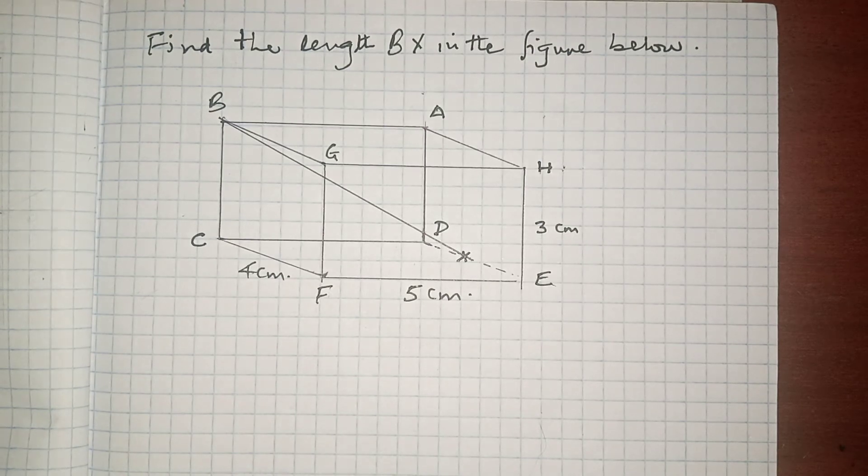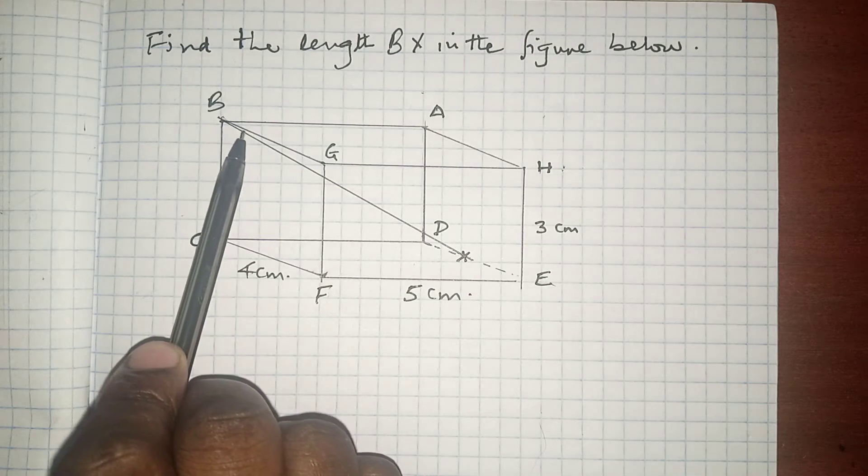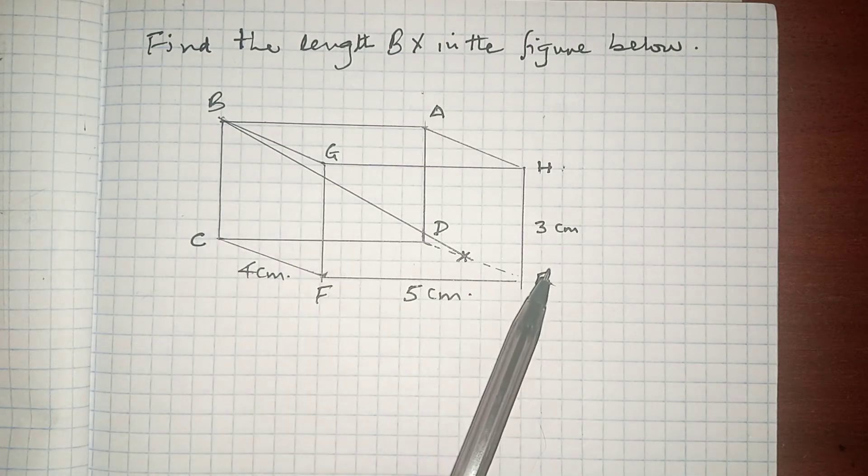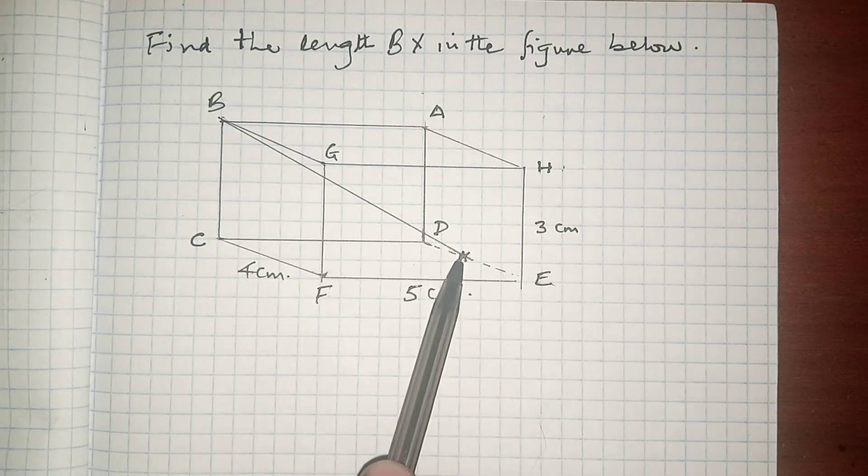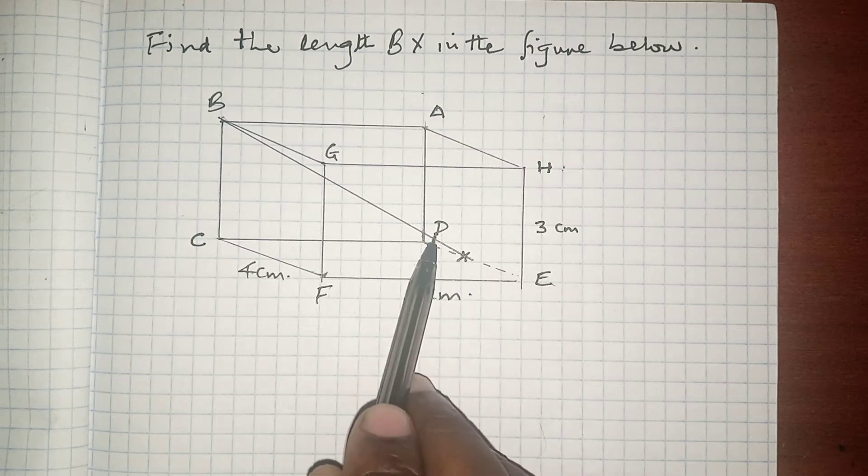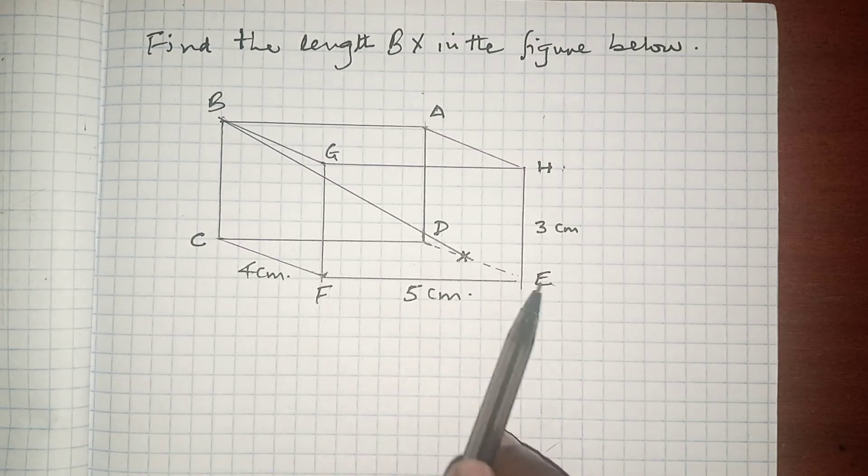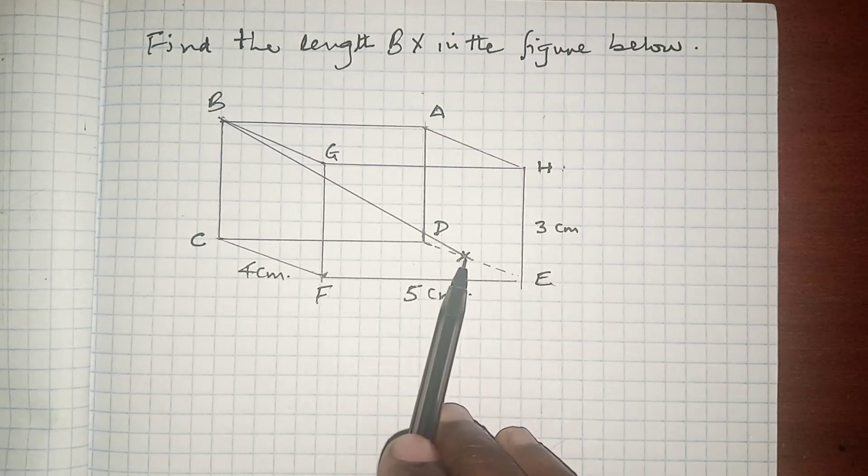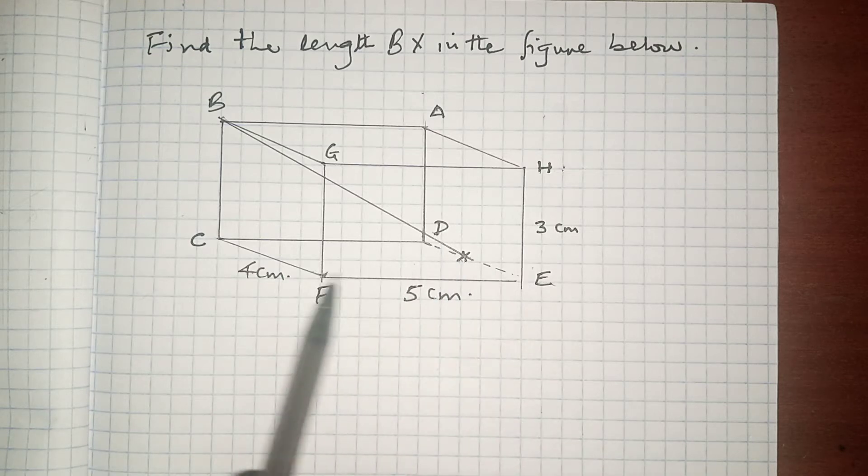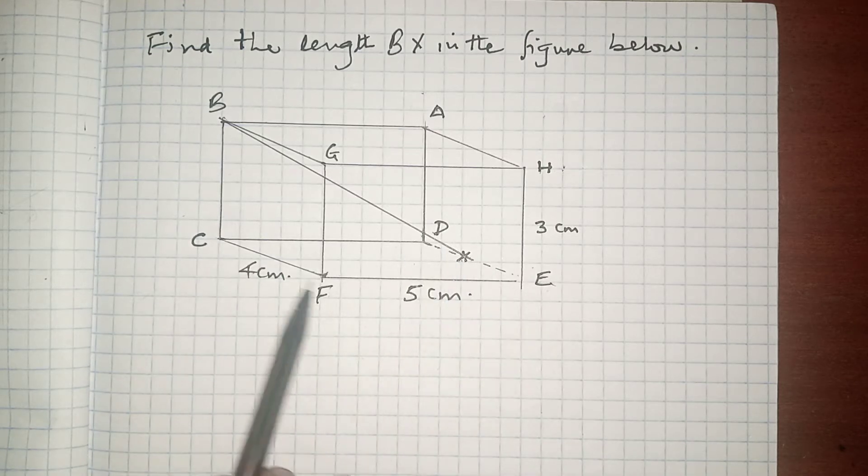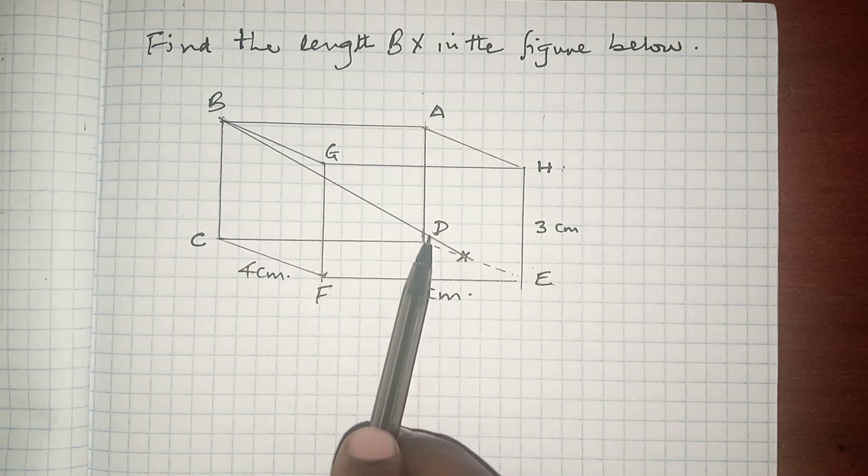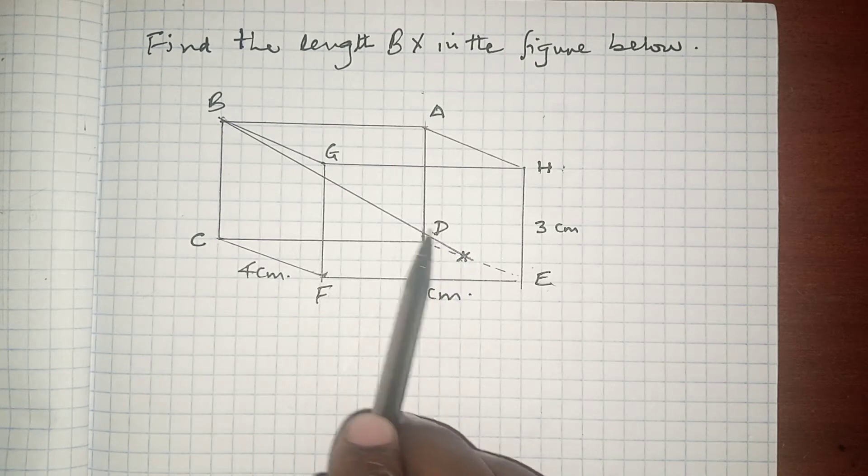I want us to reason together. BX is not the diagonal. It's not a true diagonal because X is at the midpoint of DE. So if DE is actually 4 cm, then DX is 2 cm.